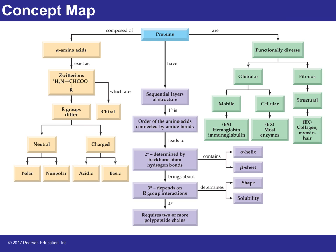This is the concept map — just a summary of everything learned about proteins. Remember they are made of amino acids, and we looked at the different configurations based on the secondary, tertiary, and quaternary structures of proteins.